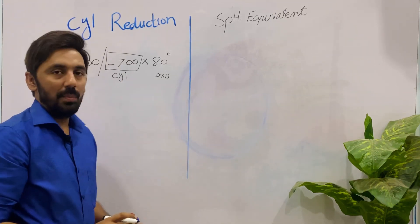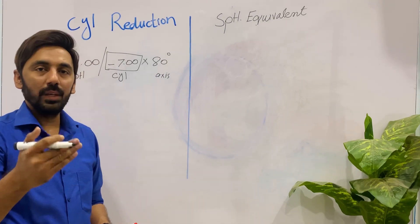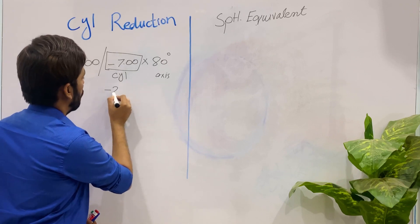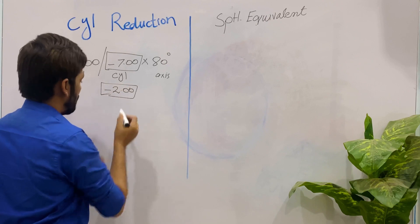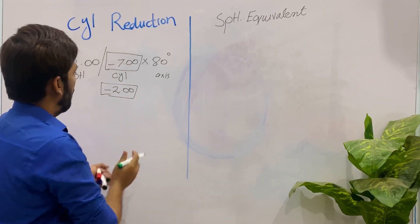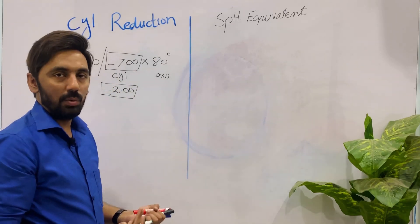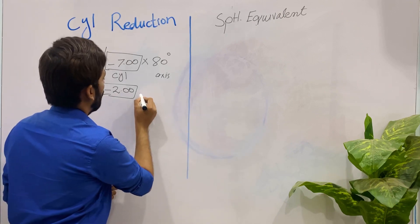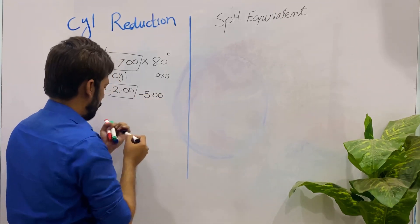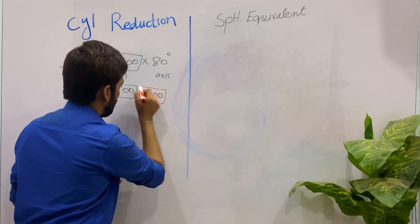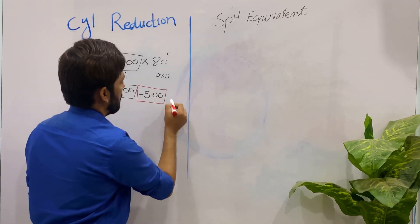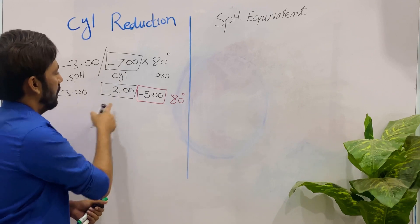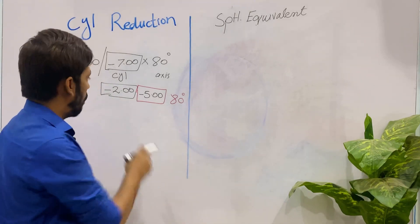From minus seven I want to prescribe minus five, which means I want to reduce minus two of cylinder from the whole cylindrical power. So our reduced cylinder is minus two. If I reduced minus two from minus seven, the remaining value is obviously minus five — that is the remaining cylinder — and the axis remains the same at 80.